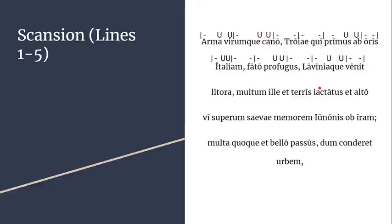With CT indicating a long sound and 'alto' also being long, and using the dactyl-into-spondee rule, the three syllables before 'alto' — 'ja-ta-tus-et' — work out as a dactyl. That gives the full scansion: 'ille multis ille terris jactatus et alto.'